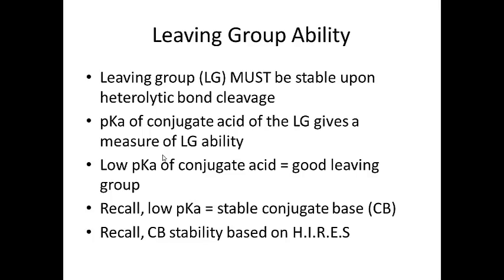If the conjugate base is stable, that means that particular conjugate base would make a good leaving group. There are five factors that help with stabilization of a conjugate base: hybridization, induction, resonance, electronegativity, and size.